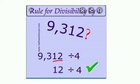Rules for divisibility by 4: the number formed by the last two digits must be divisible by 4. The last two digits are 1 and 2, meaning 12. Since 12 is divisible by 4, therefore 9,312 is also divisible by 4.